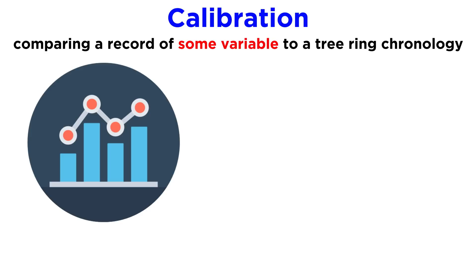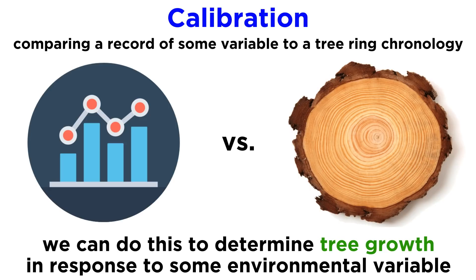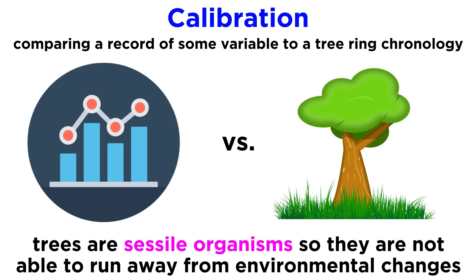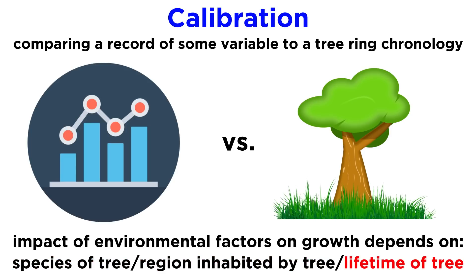Just remember that a chronology is a catalog of growth for multiple trees in a given area. Another important term is calibration. In dendrochronology, calibration is the process of comparing an independent record of some environmental variable to a reliable tree ring chronology, used to determine tree growth in response to that variable. Being sessile organisms, meaning they are fixed in one place, trees cannot run from the swirling changes in their environment, and are supremely sensitive to those changes.